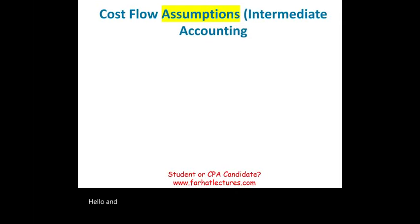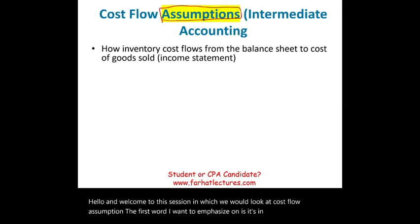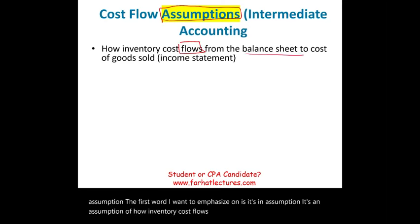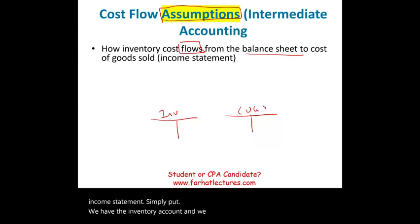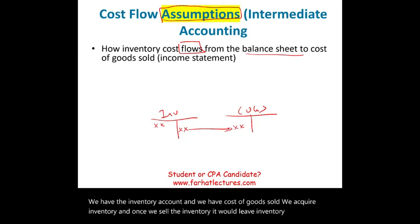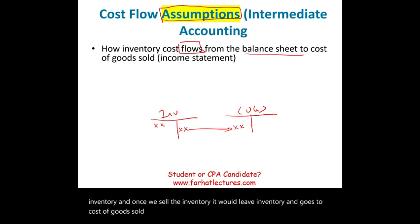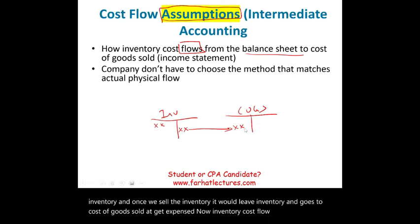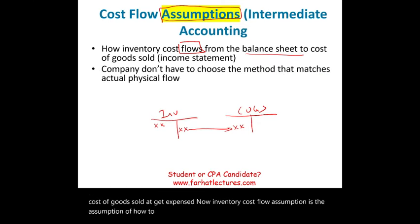Welcome to this session on cost flow assumption. The key word is assumption — it's an assumption of how inventory cost flows from the balance sheet to the income statement. We have the inventory account and cost of goods sold. We acquire inventory, and once we sell it, it leaves inventory and goes to cost of goods sold, where it gets expensed.